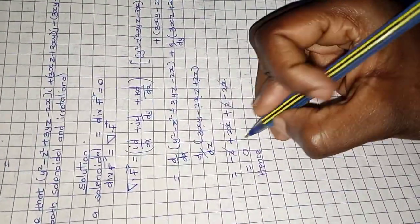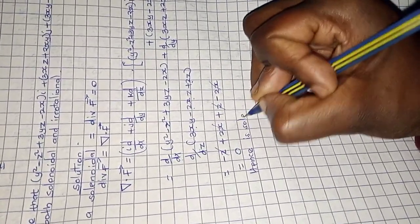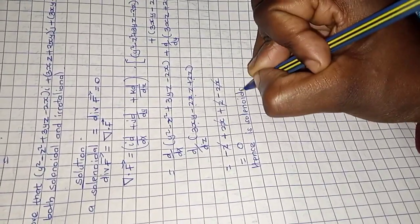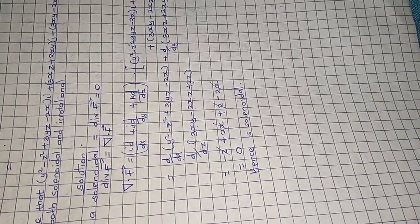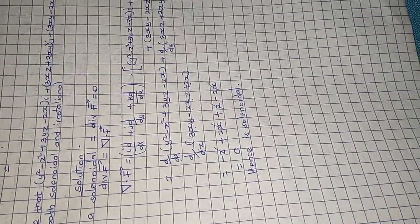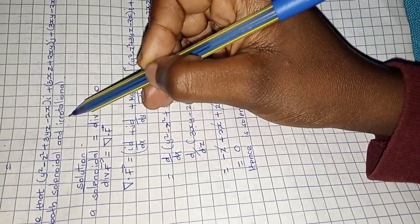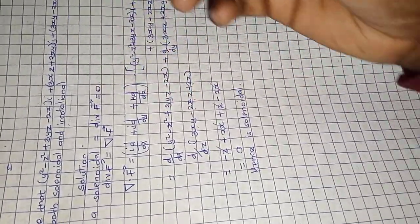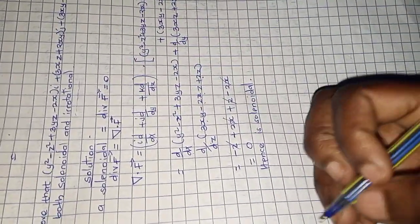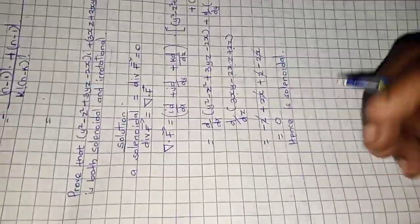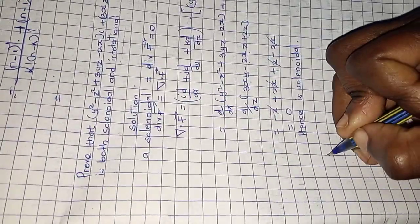This equals zero, hence the vector field is solenoidal. Now moving on to proving that it is irrotational.